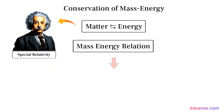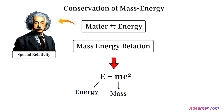According to the mass-energy relation, E equals M times C squared, where E is energy, M is the mass of the object, and C is the speed of light in the vacuum.